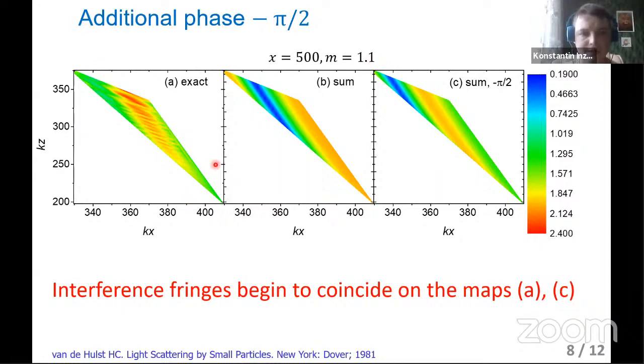Here you can see maps for double solution region for parameter 500 and refractive index 1.1. Here is the exact case. Here is only sum of two different electric fields. And here is sum with additional phase. We can see that interference fringes begin to coincide. We can see a red line in the same parts. If we change the scale, we'll have additional interference regions here, and it will begin to coincide with this approximation.